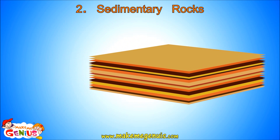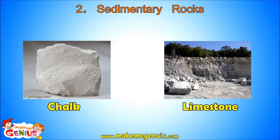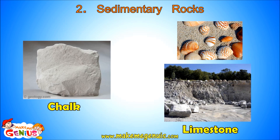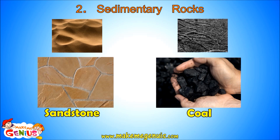Sedimentary rocks have very clearly different layers, known as beds or bedding planes. Limestone and chalk are two kinds of sedimentary rocks. The type of sedimentary rock formed depends upon the sediments that get compressed during formation. For example, limestone is formed by the compression of skeletons and shells of marine animals in the sea. Sandstone is formed by the compression of sand. Coal is also a sedimentary rock — it is formed by the compression of dead trees and plants, which are also called fossils.